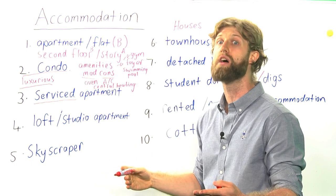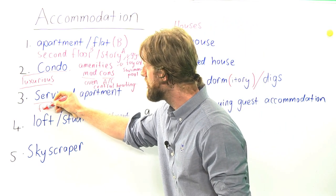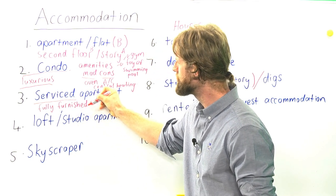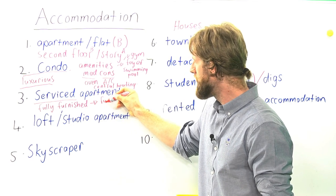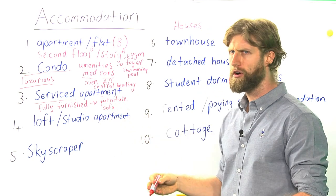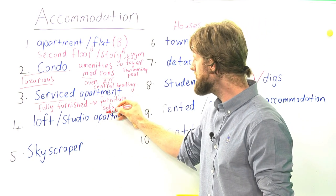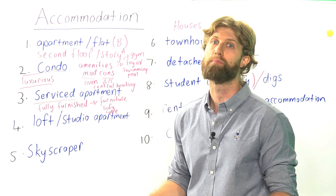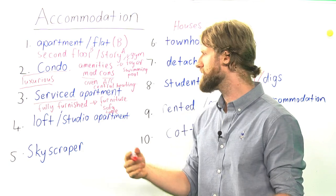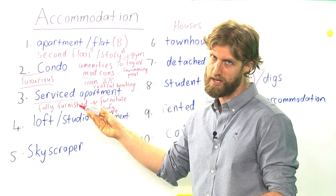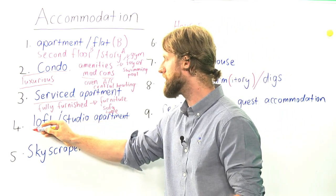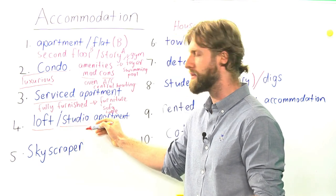We can have a lot of different examples of apartments, like a serviced apartment. Serviced means that it comes fully furnished. Furnished means furniture — things such as a sofa or maybe a nice table — so you don't have to go somewhere to buy it yourself. You could say: I have just bought an apartment and it was a serviced apartment. Or, I am renting a serviced apartment.